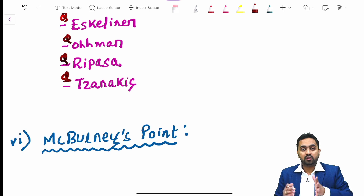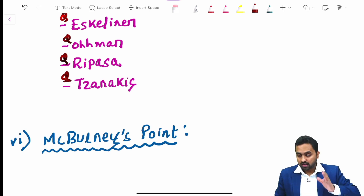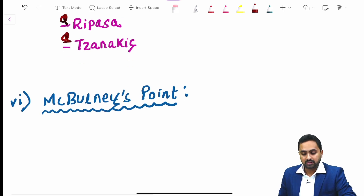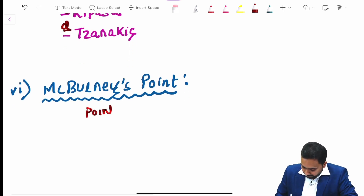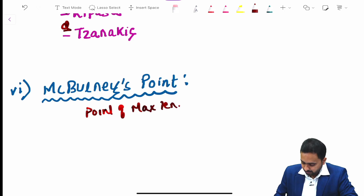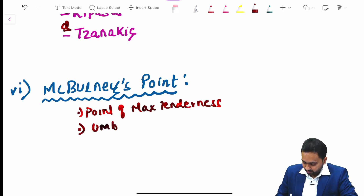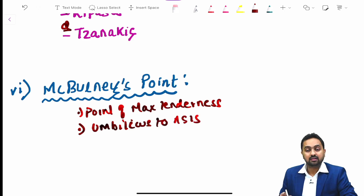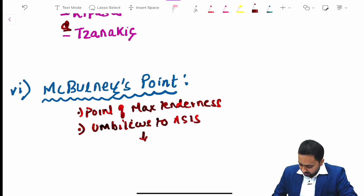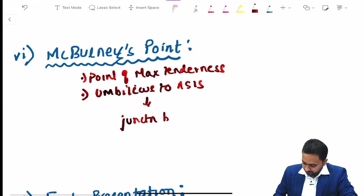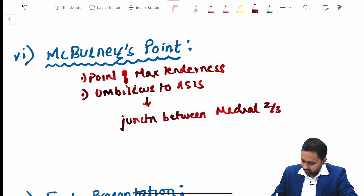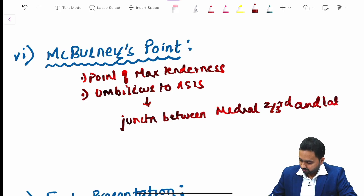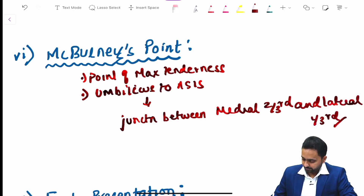McBurney's point is the point of maximum tenderness in acute appendicitis. It lies on a line joining the umbilicus to the anterior superior iliac spine, at the junction between the medial two-thirds and the lateral one-third.